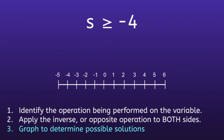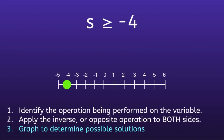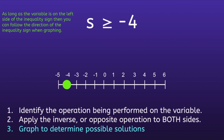Step 3: Graph to determine possible solutions. Since we have a greater than or equal to sign, we use a closed circle because negative 4 is included as a solution. We place the closed circle at negative 4 on the number line. Since s is to the left of the inequality sign, we follow its direction when graphing — the sign points to the right, so the arrow points to the right as well. Any number to the right of negative 4, including negative 4, is a solution.